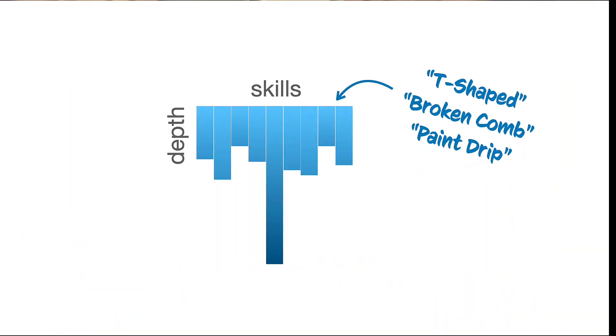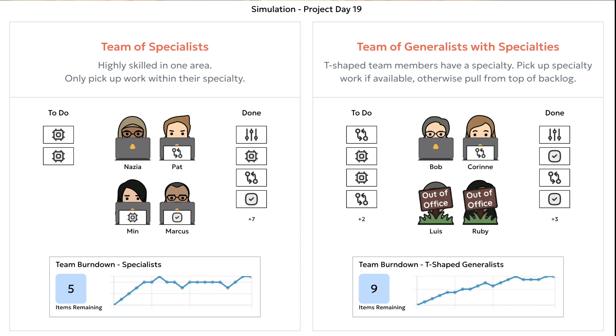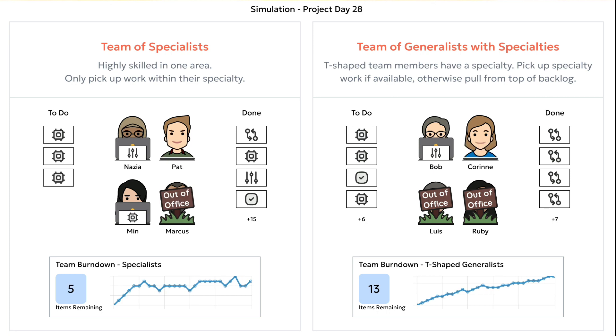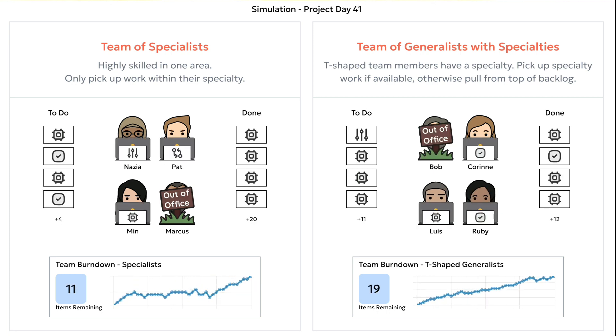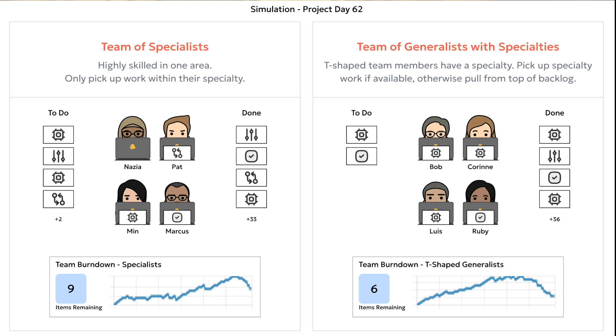A team of multi-skilled people. Sometimes folks who have a deep specialty plus some other skills are called T-shaped. Other words I've heard include paint drip or broken comb. The key thing is that they don't only stick to a single area of specialty — they're growing other skills as well. Let's set up a team of T-shaped people where each person has a deep specialty in one of the four needed areas, but a generalist level of skill in the other areas. The T-shaped agents in the simulation pick up work in their specialty when it's available, but if it's not, they pick up from the top of the backlog. As a result, when someone on the T-shaped team goes out on vacation, the rest of the team can pick up their slack. Round six goes to the T-shaped team.